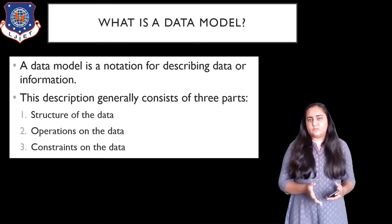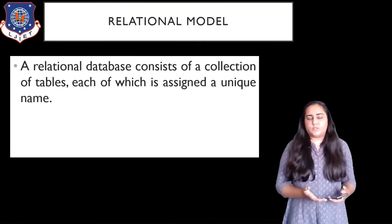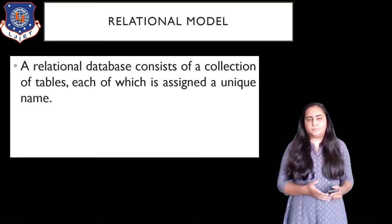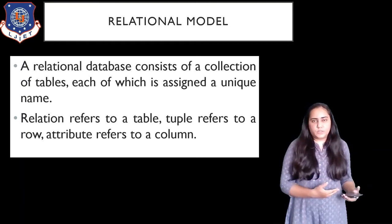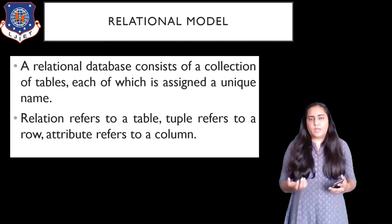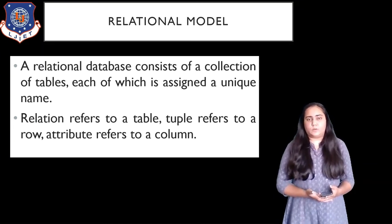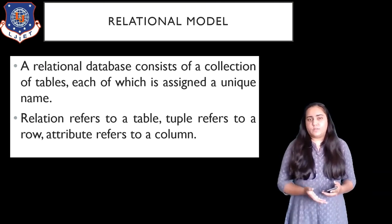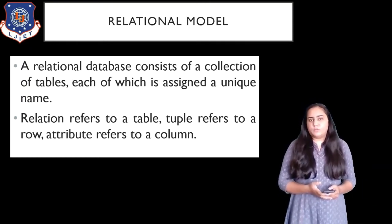In this video we are going to study one such data model, which is the relational model. The relational model is just a collection of tables, and each table is given a unique name. Tables have rows and columns. A table is known as a relation in a relational model, because each table in the relational model is related with another table. Each row is called a tuple, and each column is known as an attribute. This is one of the most widely used data models in database management systems.